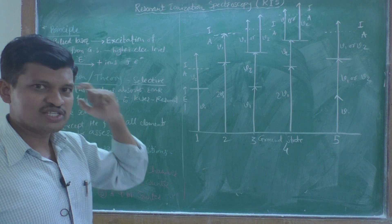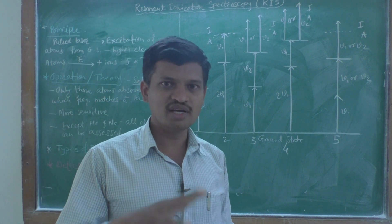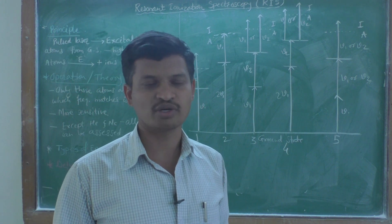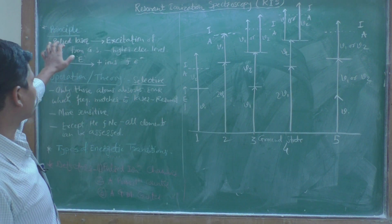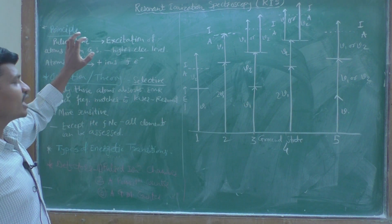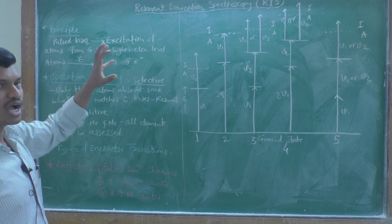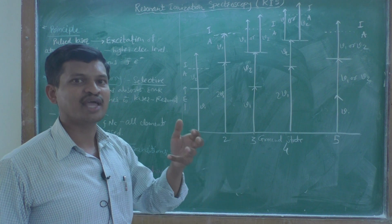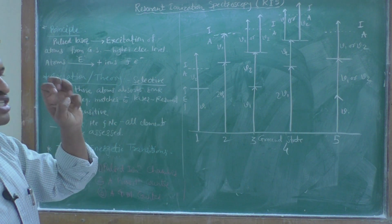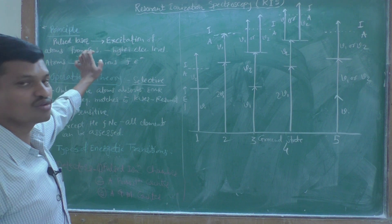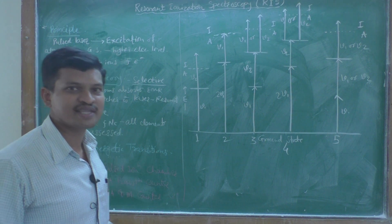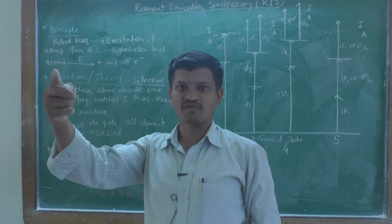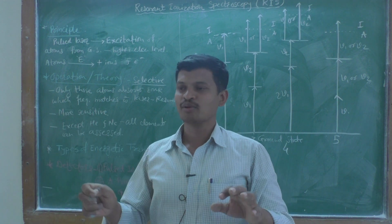With the help of a pulsed laser — using laser as a source of electromagnetic radiation — the analyte sample is irradiated. Just like in atomic fluorescence spectroscopy, the pulsed laser is used to excite the atoms of the analyte sample from the ground state to a higher electronic energy level.